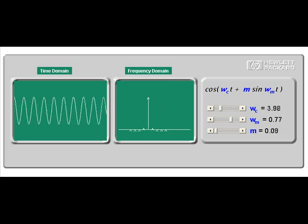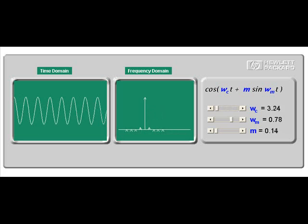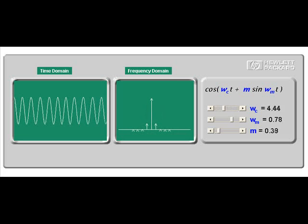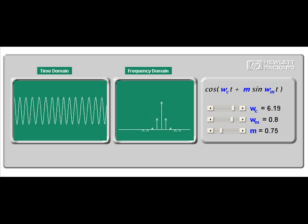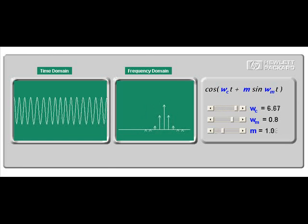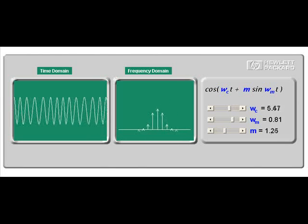We'll see that this is a trade-off between bandwidth and power. A plot of the resulting signal in the time domain, that is amplitude versus time, is shown here on the left in this interactive graph labeled time domain.